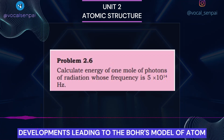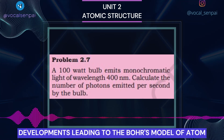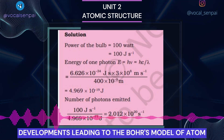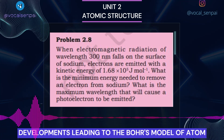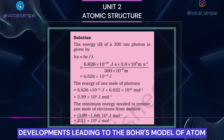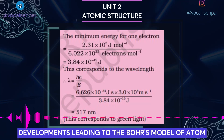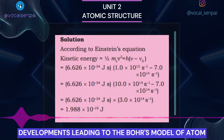Dual Behavior of Electromagnetic Radiation: The particle nature of light posed a dilemma for scientists. On the one hand, it could explain the black body radiation and photoelectric effect satisfactorily, but on the other hand, it was not consistent with the known wave behavior of light which could account for the phenomena of interference and diffraction. The only way to resolve the dilemma was to accept the idea that light possesses both particle and wave-like properties, i.e., light has dual behavior. Depending on the experiment, we find that light behaves either as a wave or as a stream of particles. Whenever radiation interacts with matter, it displays particle-like properties, in contrast to the wave-like properties (interference and diffraction) which it exhibits when it propagates. It turns out that some microscopic particles like electrons also exhibit this wave-particle duality.